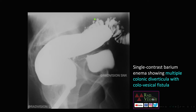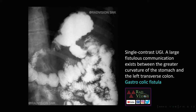Here you can see a single contrast barium enema with multiple colonic diverticulae. While doing the barium enema, you should not see contrast in the bladder. Because of an abnormal fistulous tract or communication between the colon and the bladder, contrast is visible in the bladder during the barium enema. This was a case of multiple colonic diverticulosis with colovesical fistula.